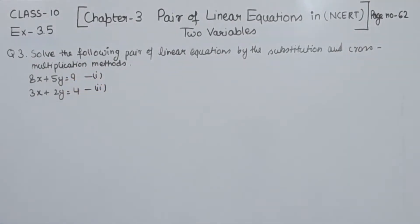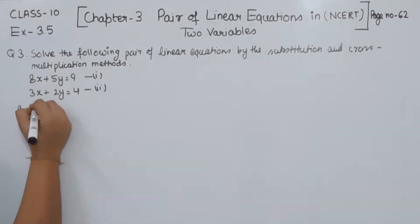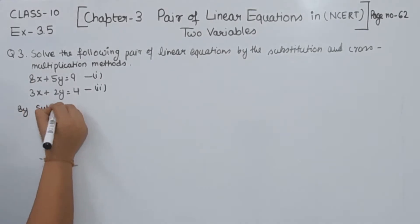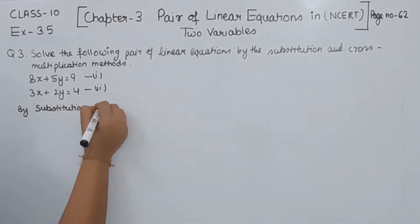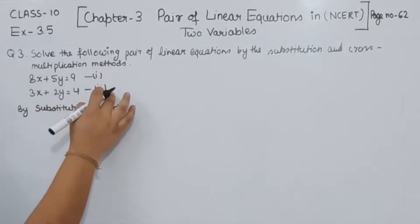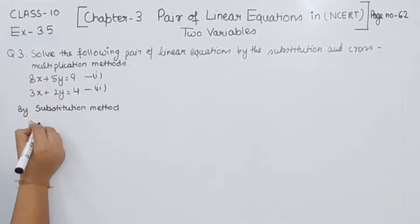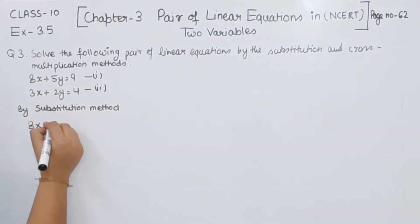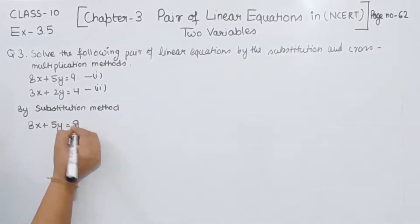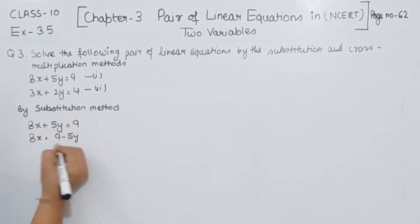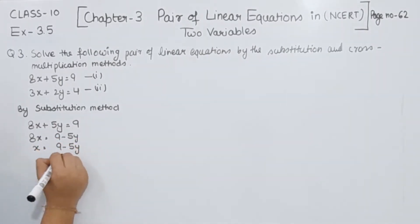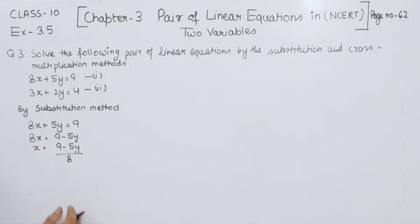First of all we have to solve this by the substitution method. We take equation number 1 and find the value of one variable. So 8x equals 9 minus 5y, and the value of x is (9 minus 5y) divided by 8.